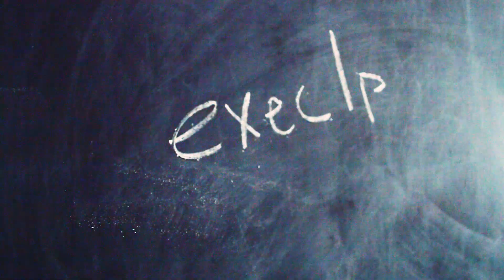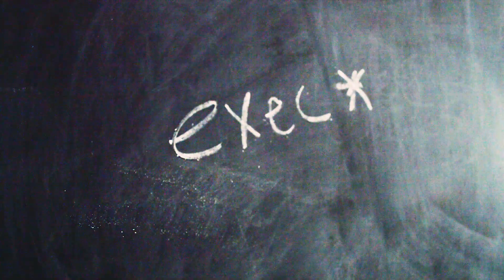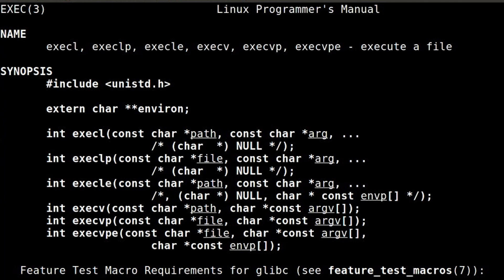Today we want to look at how you make one process actually run another program in a child process. How do I create a child process that runs another program? And the answer is exec — exec VE, exec LP, exec VPE... exec star. Exec is a family of function calls available on any POSIX-compliant operating system that essentially runs a new program on top of the current process. Pay attention here because it's a little weird: when you call exec, it doesn't create a child and run the program in a child process. It actually runs the program that you specify, but it replaces the current process.